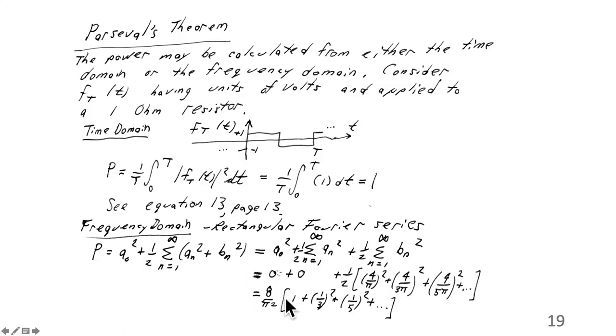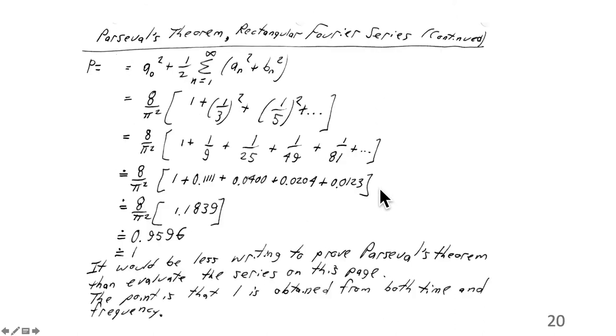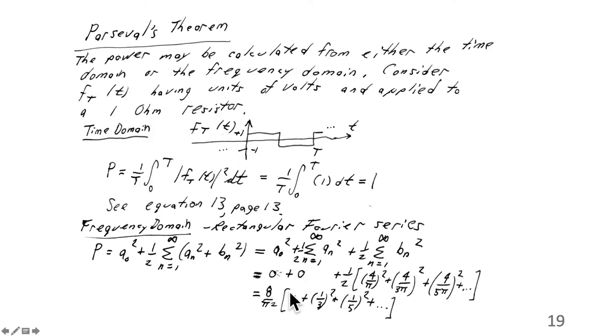So we need to work out this series to show that this is going to equal one. Just repeating what's on the previous page, if we evaluate that series, the a zero is zero, a n is zero, the b n coefficients are, the first one is 16 over 2, which is 8, and there's a pi squared in the denominator.